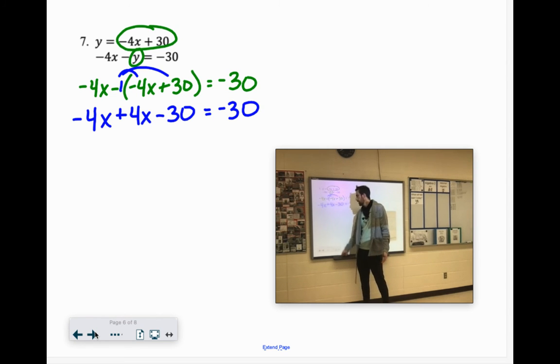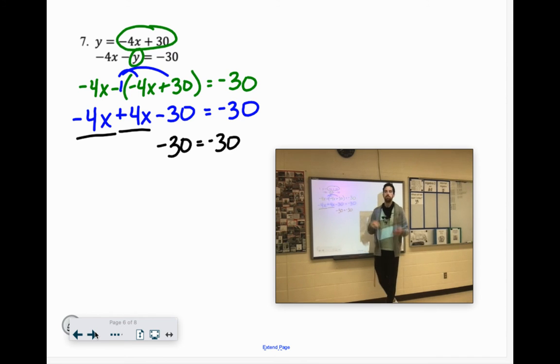So combining my like terms, negative 4x plus 4x, those cancel each other out. We are left with negative 30 equals negative 30. This is another one of those bizarre problems. Now, is that true? Does negative 30 equal negative 30? Yes.